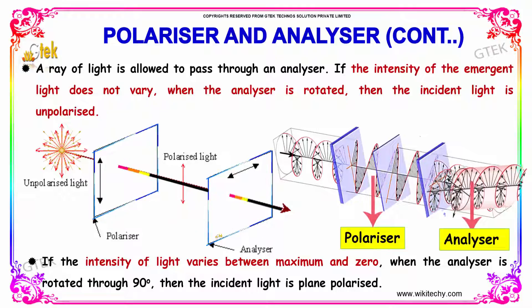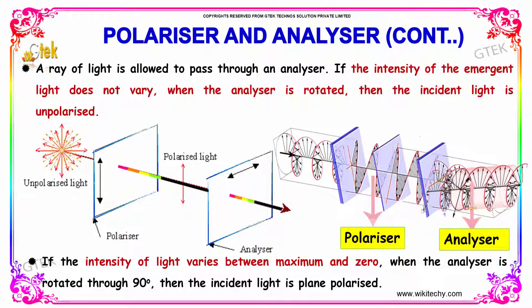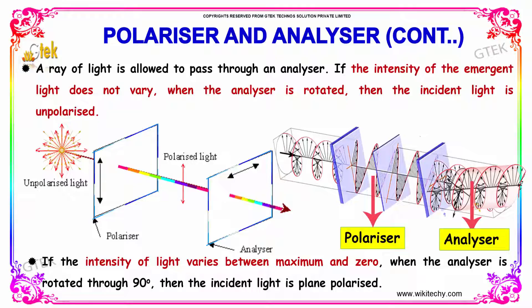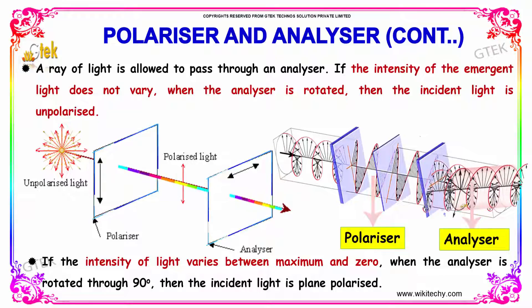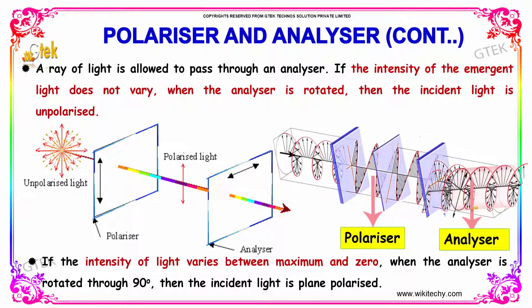If the intensity of light varies between maximum and zero when the analyzer is rotated to 90 degrees, then the incident light is considered as plane polarized.